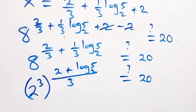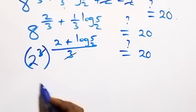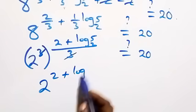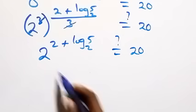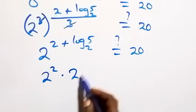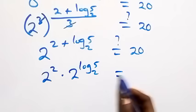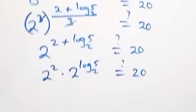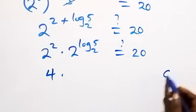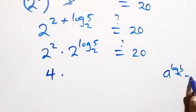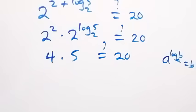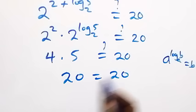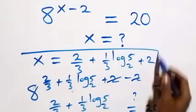We express 8 as 2 raised to power 3, then multiply the powers together. The 3s cancel, giving 2 raised to power (2 plus log 5 base 2). Applying the law of indices, this becomes 2 squared times 2 raised to power log 5 base 2, which equals 4 times 5, using the identity a raised to power log b base a equals b. So 4 times 5 equals 20, confirming left hand side equals right hand side.